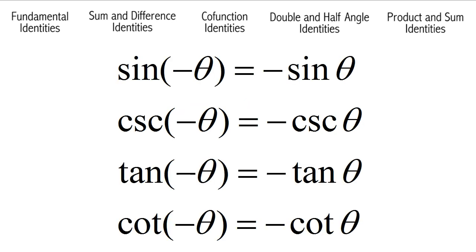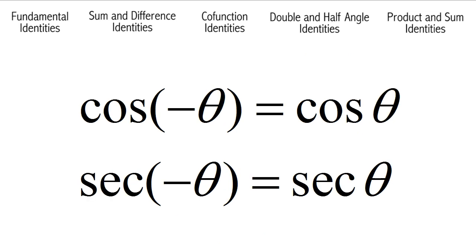Sine of negative theta is equal to negative sine theta. Cosecant of negative theta is equal to negative cosecant theta. Tangent of negative theta is equal to negative tangent theta. Cotangent of negative theta is equal to negative cotangent theta. Cosine of negative theta is equal to cosine theta, and secant of negative theta is equal to secant theta.